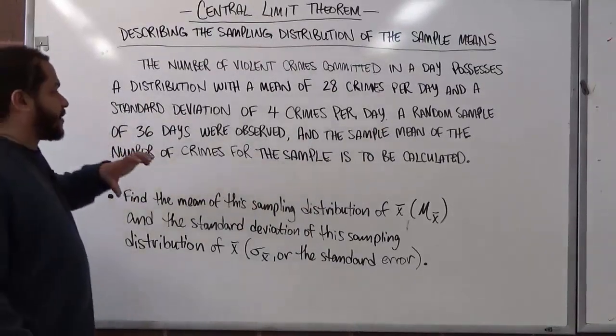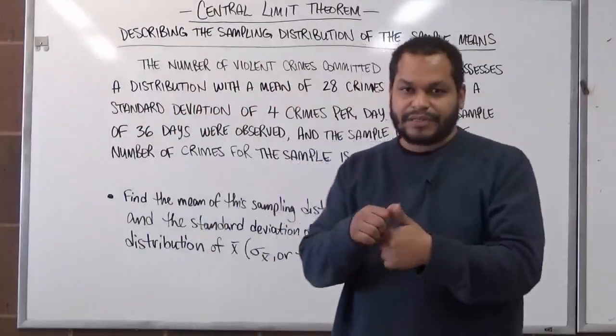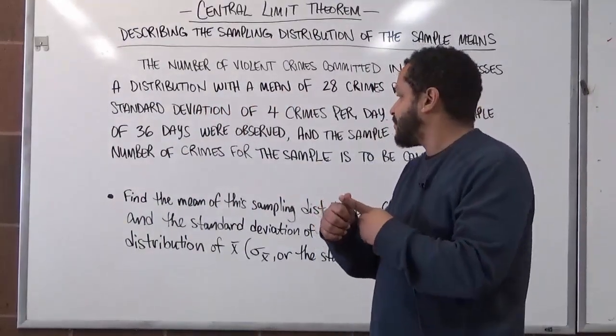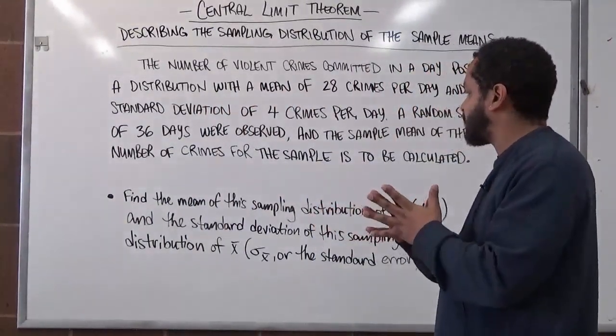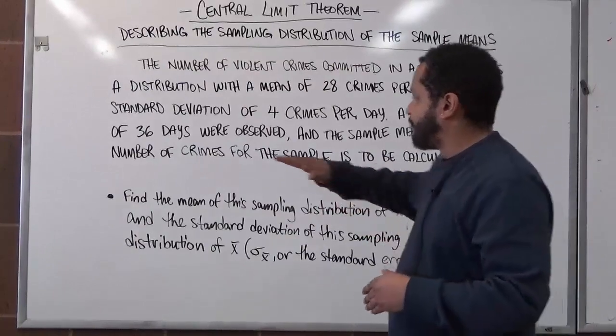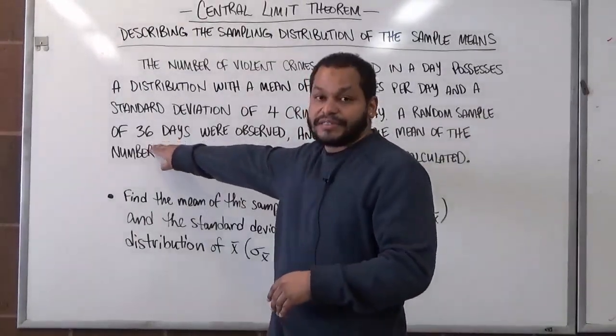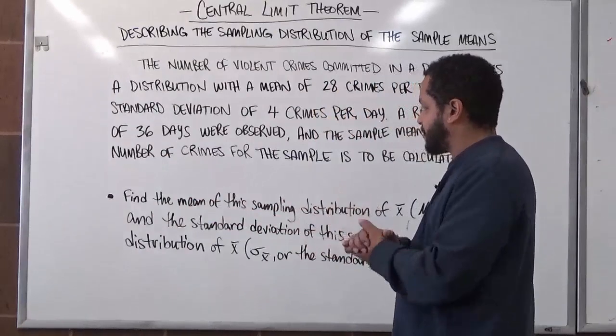We notice a few things. For one, we weren't told that this is a normal distribution. So we don't know if it's approximately or not. But because of the number of samples we have since it's 36, this becomes approximately normal.